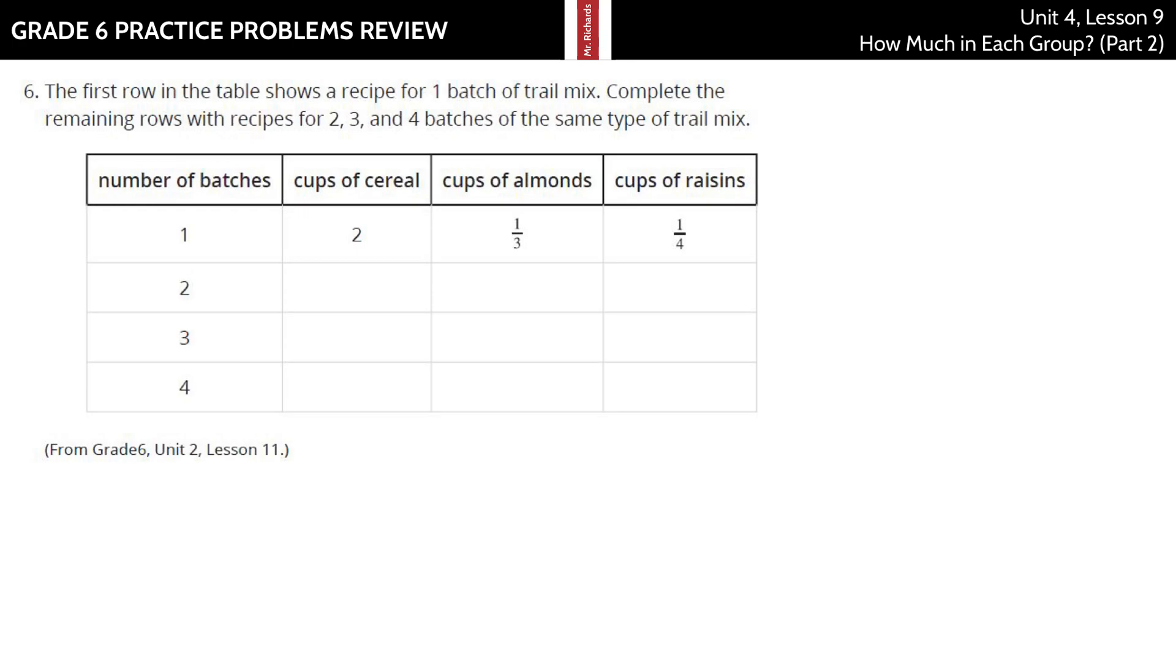The first row on the table shows a recipe for one batch of trail mix. Complete the remaining rows for recipes for 2, 3, and 4 batches of the same type of trail mix. Well, 2 times 2 here is 4, and 2 times 3 is 6, and 2 times 4 is 8. 1 third times 2 is 2 thirds. 1 third times 3 is 3 thirds, which is the same thing as 1. 1 third times 4 is 4 thirds, or 1 and a third. Try to use fractions for these, let's not use decimals. 1 fourth times 2 is 2 fourths, which is the same thing as 1 half. 1 fourth times 3 is 3 fourths. And 1 fourth times 4 is 4 fourths, which is the same thing as 1.